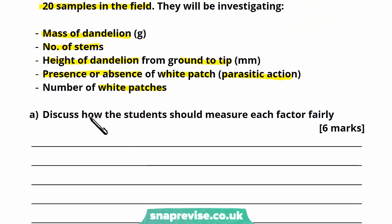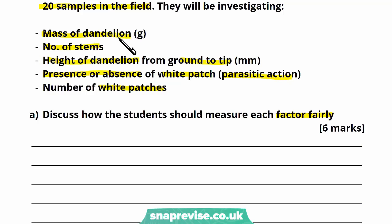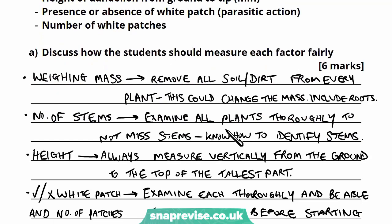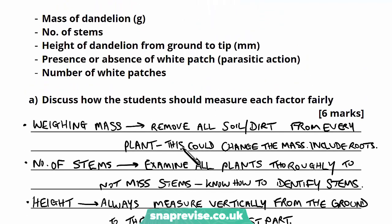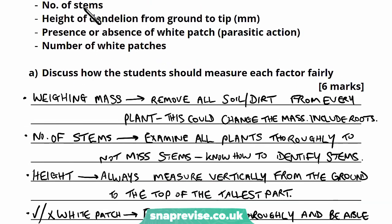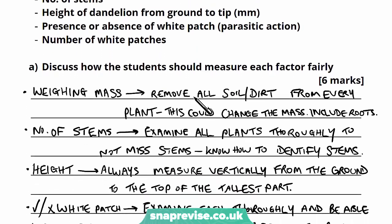Part A says discuss how the students should measure each factor fairly — it's six marks. This question is basically about how, for each of these factors that could theoretically affect the action of the fly, they should measure it in the same way to ensure the conclusions gathered are as accurate as possible. I've listed my answer discussing each factor in turn, which makes it easier for the examiner to check whether every factor on the list has been discussed.